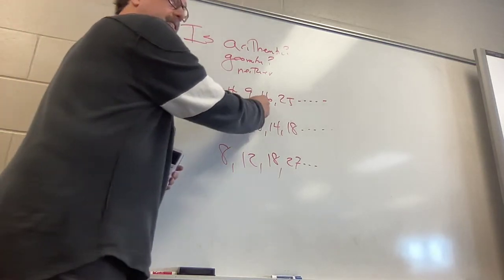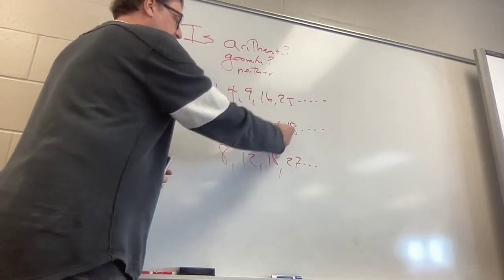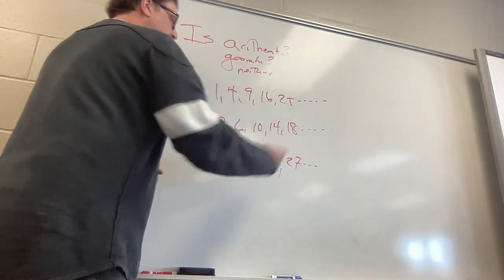I see people in back squinting. One, four, nine, 16, 25. Two, six, 10, 14, 18. Eight, 12, 18, 27.